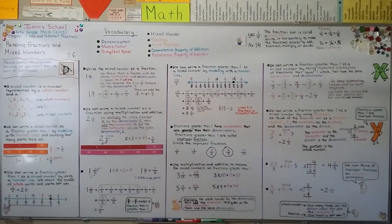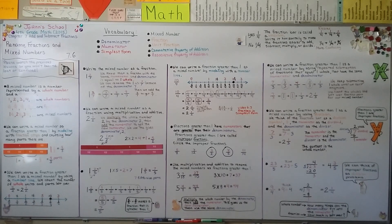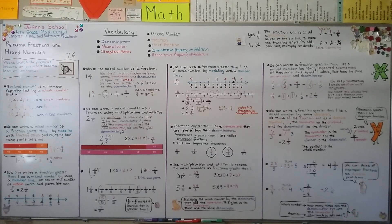We can rename fractions and mixed numbers by using fraction bars or fraction strips, a number line, multiplication and addition to rename mixed numbers as fractions, or by thinking of an improper fraction as a little division problem to convert it into a mixed number. Our next video, 7.7, will cover adding and subtracting mixed numbers with like denominators. Hope to see you there, and I hope you're having a really nice day!